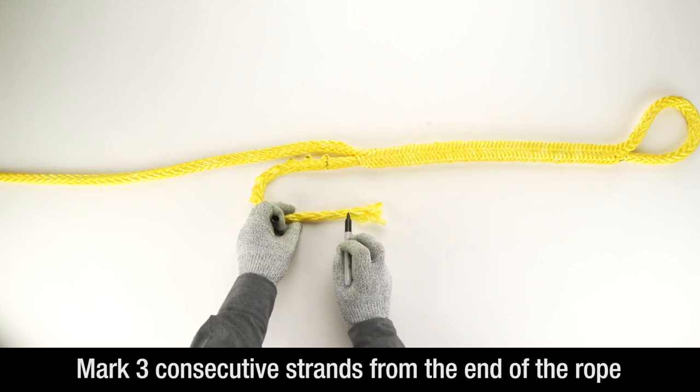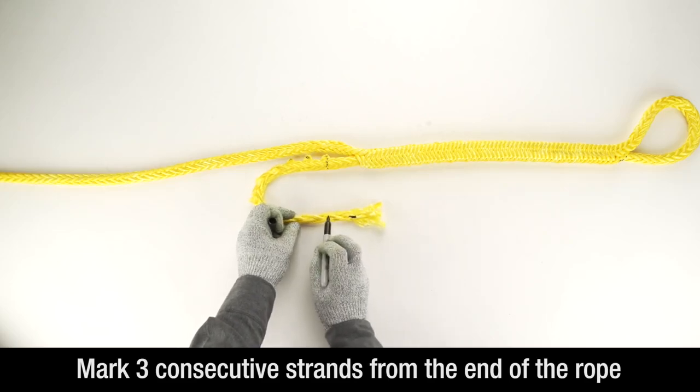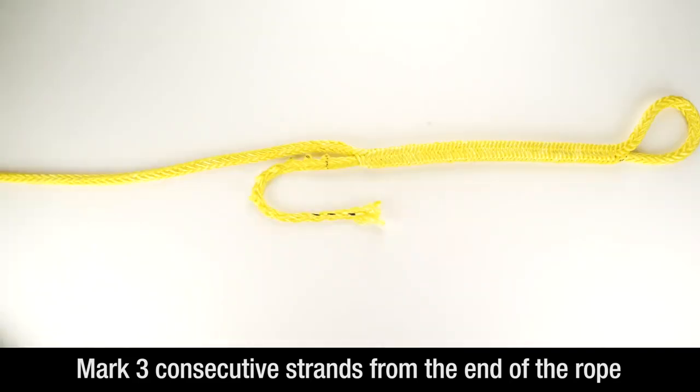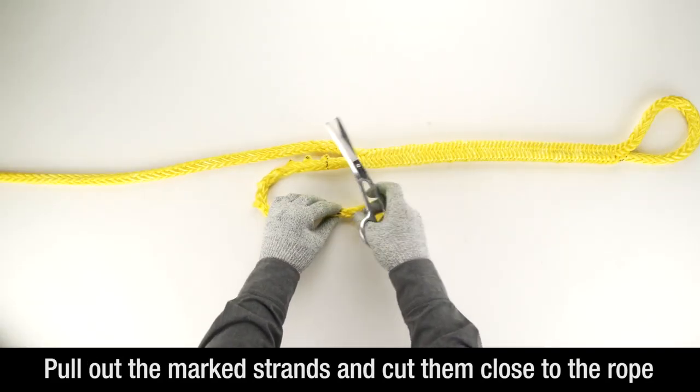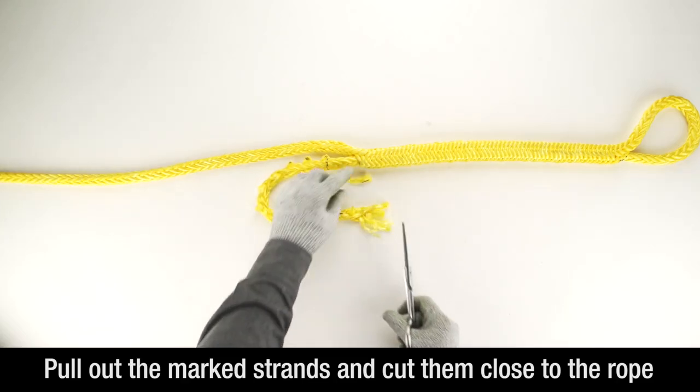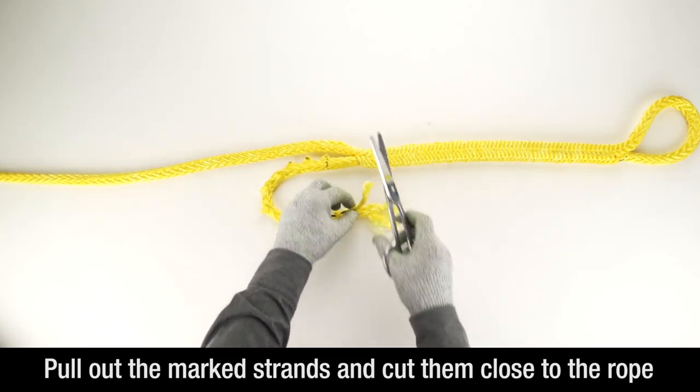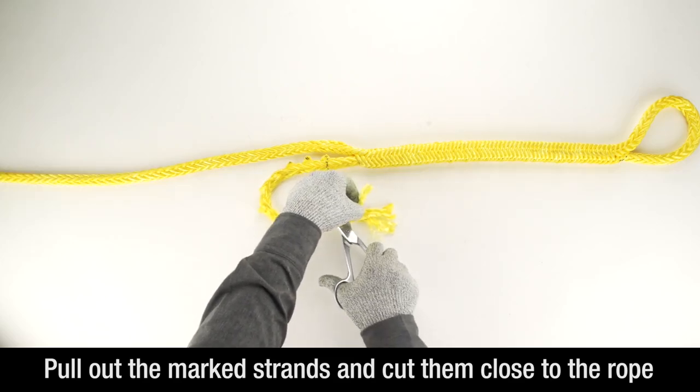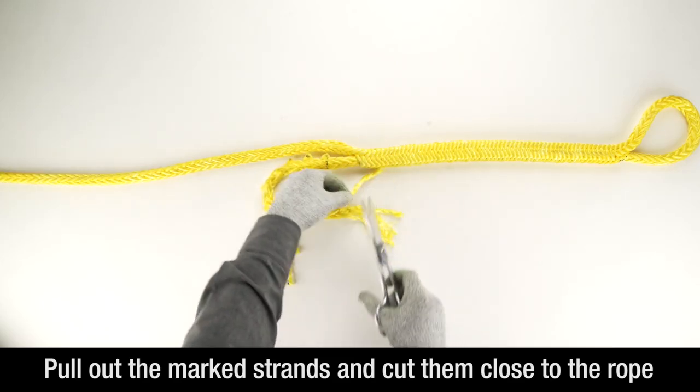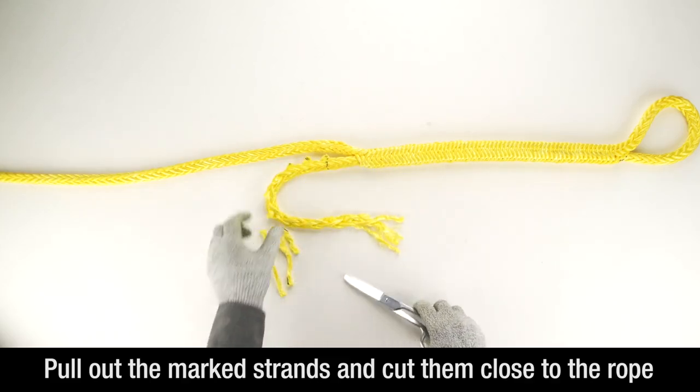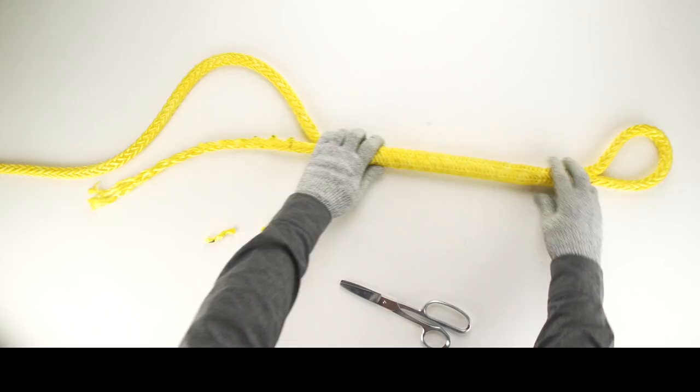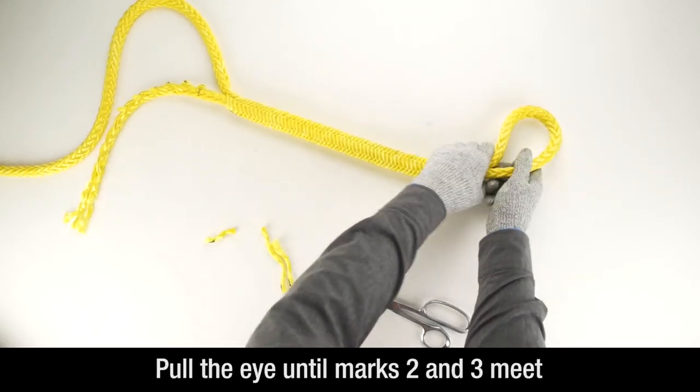Mark 3 consecutive strands from the end of the rope. Pull out the marked strands and cut them off close to the body of the rope. Pull the eye until marks 2 and 3 meet.